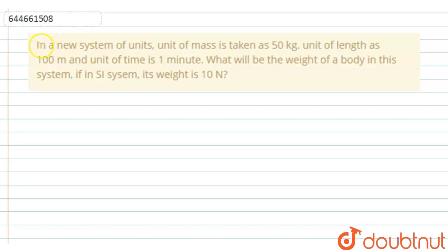The given question is: In a new system of units, unit of mass is taken as 50 kg, unit of length as 100 meters and unit of time is 1 minute. What will be the weight of the body in this system if in SI system, its weight is 10 N?